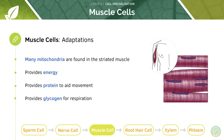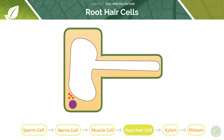Muscle cells must be adapted for contraction, so they must have many mitochondria in order to provide energy. Striated muscle has many mitochondria — mitochondria are the powerhouse of the cell and this provides energy. Muscle also has lots of protein to aid movement by sliding of one muscle fibre over the other, and it contains a lot of glycogen, which is a substrate for respiration.